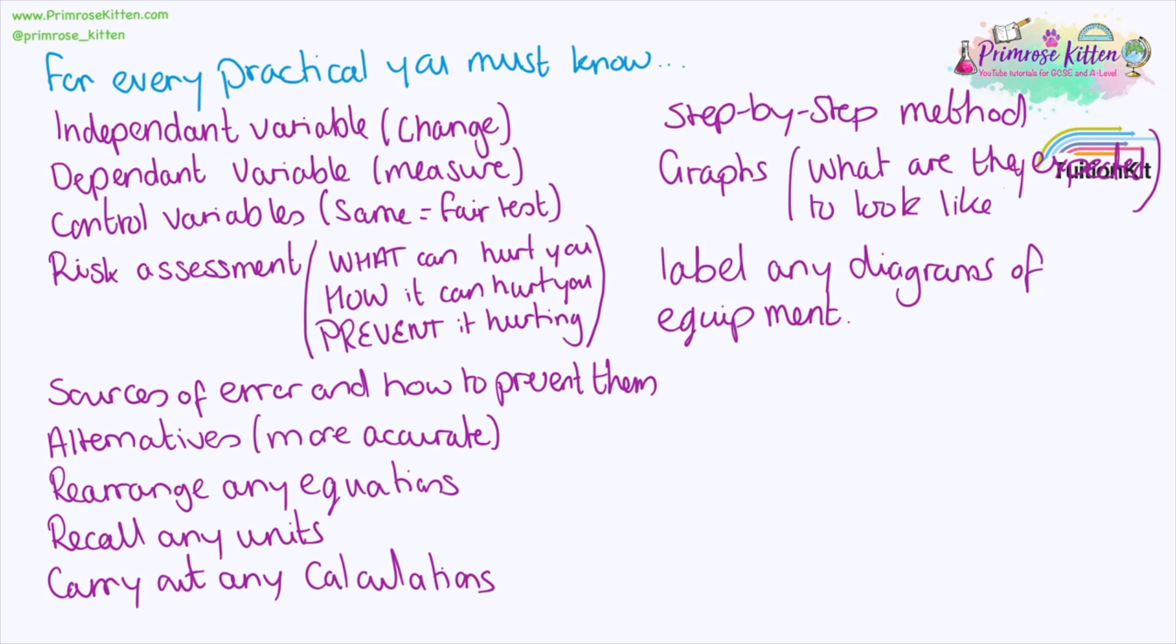The sources of error and how to prevent them. For example, energy loss to the surrounding air. We could insulate it. Any alternatives. For example, we were using a thermometer. Whereas a data logger would be more accurate. Lots of equations in there that need rearranging. And some tricky units you need to remember.